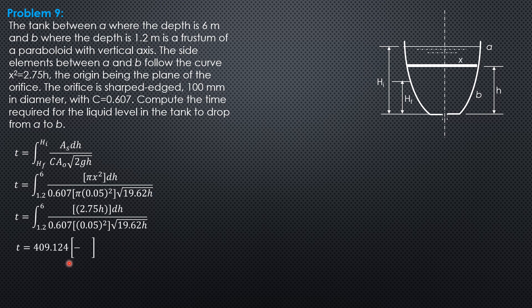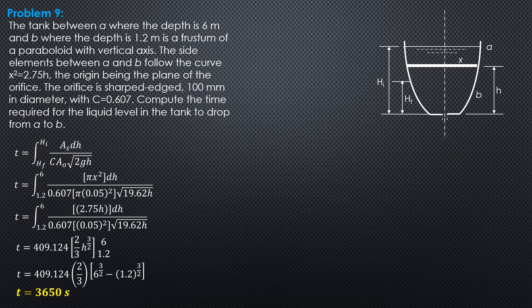So 409.124 then 2/3 H to the 3/2 from 1.2 to 6, substituting values. So 409.124 times 2/3 of quantity 6 to the 3/2 minus 1.2 to the 3/2. Solving for time, time is 3650 seconds. So that's it for this problem.